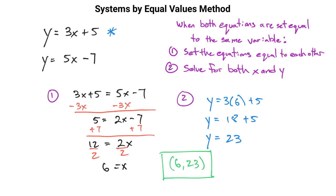This is the point where the two graphs intersect. I chose y equals 3x plus 5 to plug 6 into, but it doesn't matter. If you use y equals 5x minus 7, you get 30 minus 7, which is still 23. That's the point of systems of equations: finding the one coordinate point that satisfies both equations at the same time.